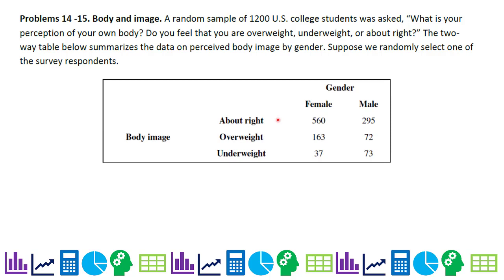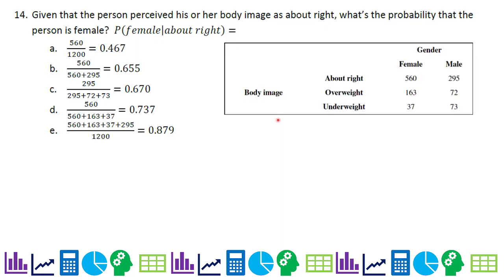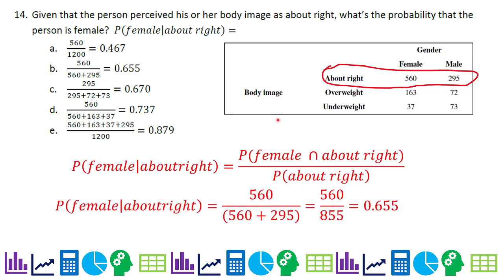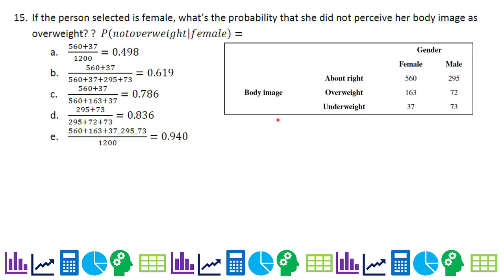Problems 14 and 15: a random sample of 1,200 U.S. college students were asked about their perception of their own body image — overweight, underweight, or about right. The two-way table summarizes data by gender. Problem 14: given that a person perceived their body image as 'about right,' what is the probability the person is female? Using the conditional probability formula, we get 560 ÷ (560 + 295), which equals choice B.